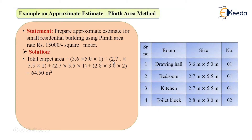Similarly for the bedroom, the size is 2.7 by 5.5 and number is 1, so I have taken 2.7 into 5.5 into 1. Then for the kitchen, the size is 2.7 by 5.5 and number of kitchens is also 1, therefore 2.7 by 5.5 by 1. Then the toilet blocks — here the toilet blocks are 2, therefore I have taken 2.8 by 3 by 2. This comes to 64.50 square meters.